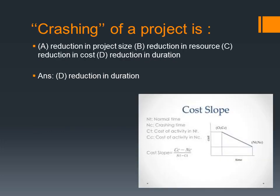Next question: crashing of a project refers to what? The options are reduction in project size, reduction in resource, reduction in cost, and reduction in duration. Crashing a project means reduction in duration by adding extra resources.